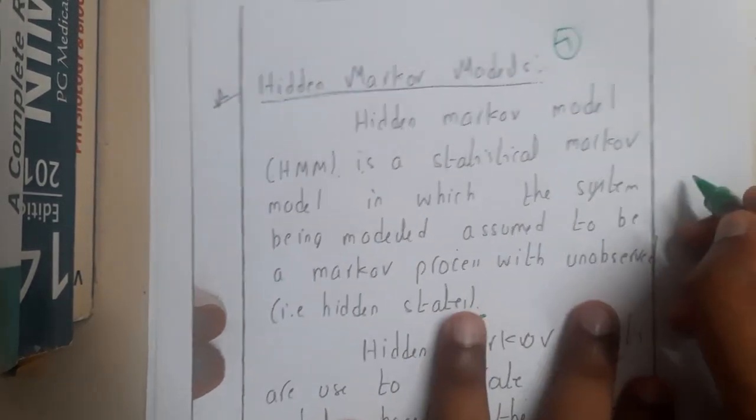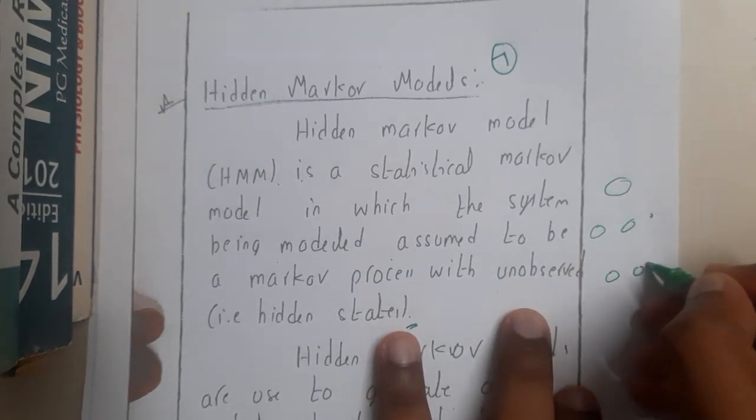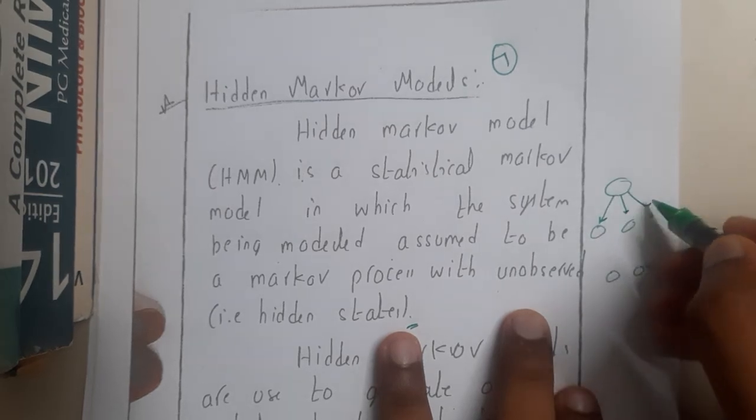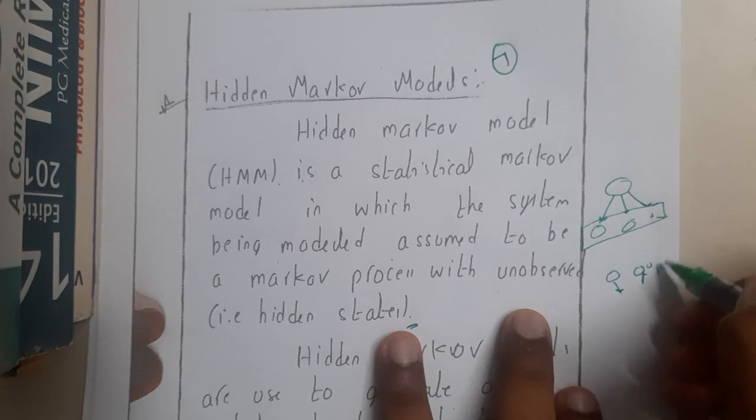Basically they will enter into this layer. You cannot see the hidden layers, you will only know the output. So based on the output we can guess this layer, the above layers. This is possible in Hidden Markov Model.